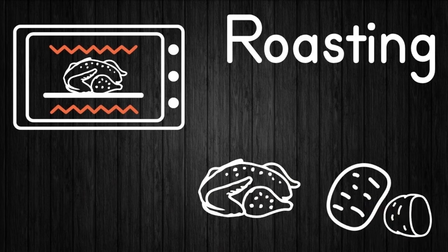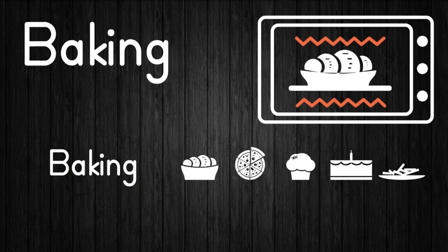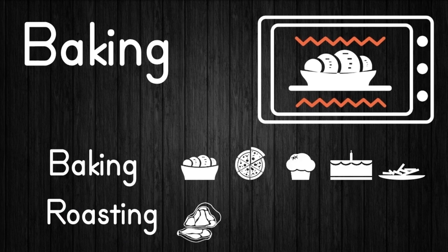Baking is a dry heat cooking method that can be done in an oven or on hot stones. Baking usually refers to foods prepared from flour or meal derived from some form of grain. Baking is similar to roasting; however, baking refers to foods that have no initial structure, like breads, pies, cupcakes, cakes, and cookies, while roasting refers to foods like meat and vegetables that already have a solid structure before cooking.